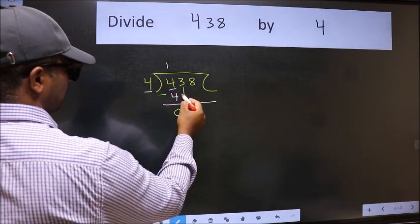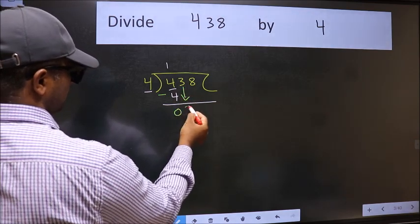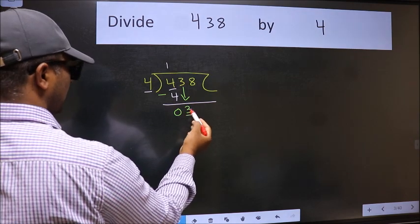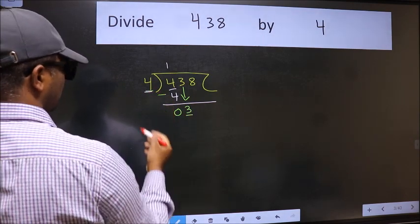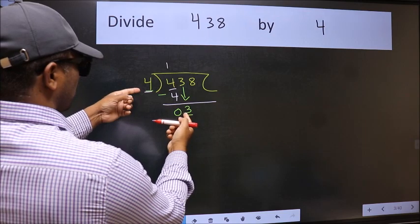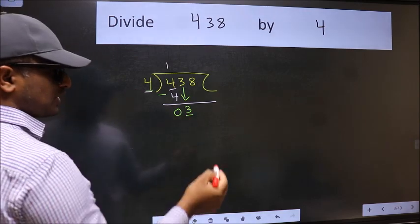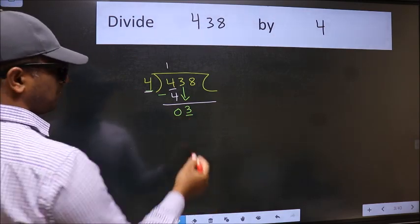After this, bring down the beside number. So 3 down. Now here we have 3 and here 4. 3 is smaller than 4. So we should bring down the second number.